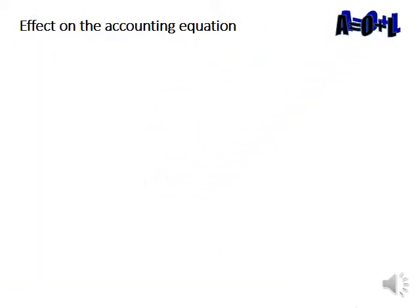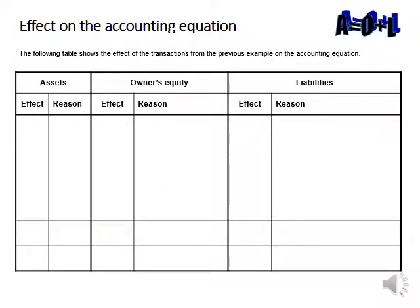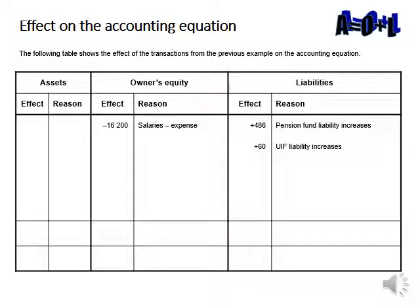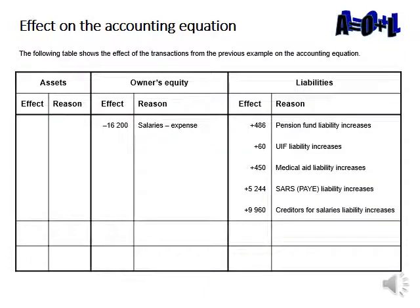What effect will this transaction have on the accounting equation? Salary is an expense, so our earnings equity will decrease. Pension fund contributions are liabilities, so the pension liability will increase, as well as UIF and the medical aid, SARS, and the creditors for salaries. So our earnings equity will decrease by $16,200 and our liabilities added up together will also increase by $16,200.